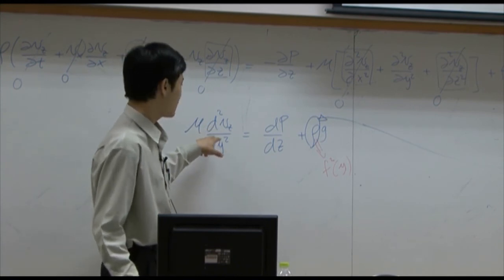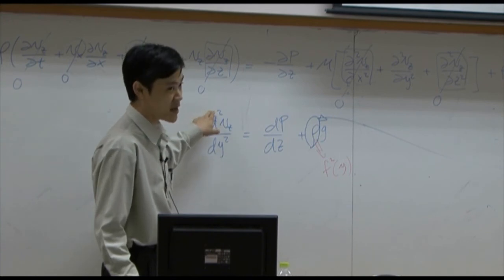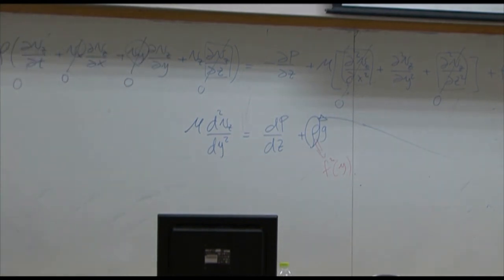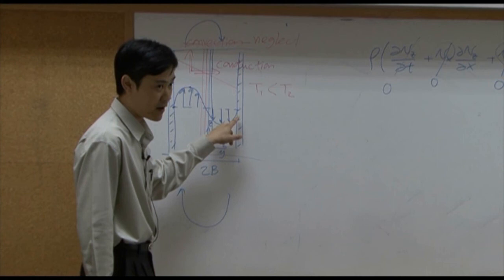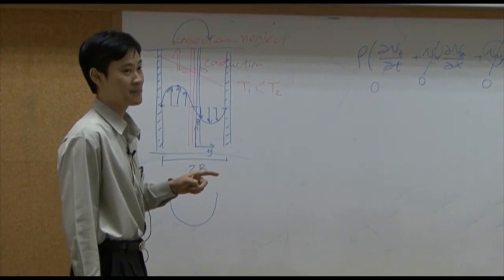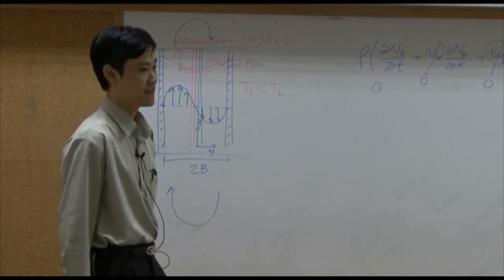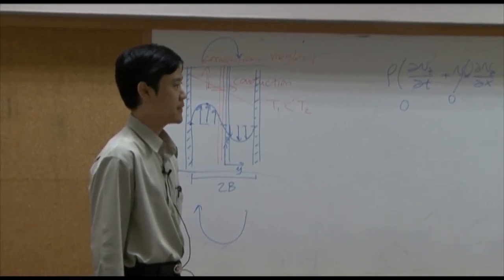In this, this is second order differentiation. That means you need two boundaries. You have two boundaries as well. One is here. The other one is this.